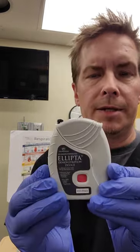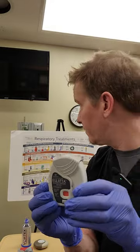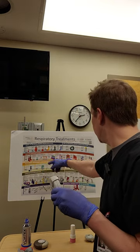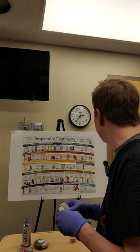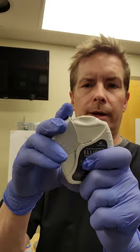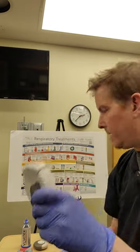This is the Ellipta, and it houses many different types of medications — you'll see in a second: Incruse, Anoro, Breo, Trelegy. Here's how it functions. To open it is actually how you engage it. So we open it — hear the click — the little tablet is crunched and it's ready for the patient right there. Then just close it back up.